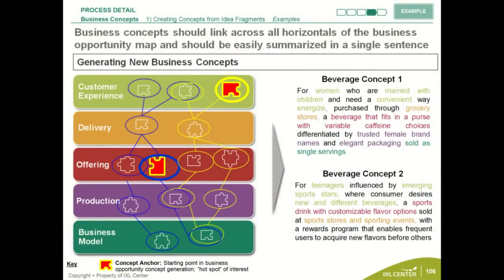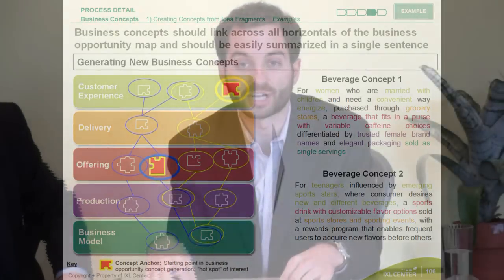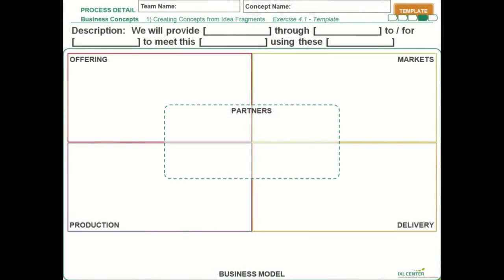For example, if you start with a particular offering, think about how you're going to produce that offering and look to the business opportunity map on that specific row to pick out more idea fragments. Do the same for the market you'll be targeting, the delivery mechanisms or channels you'll be using, the business model, and the partners you'll need. Now you start to have a more complete concept. We've provided a template with each of those sections, and what you should wind up with is a single slide where if somebody reads it they say 'I understand what that concept is.'